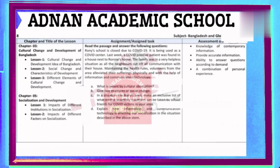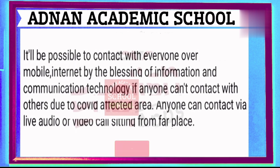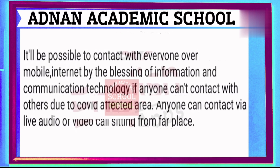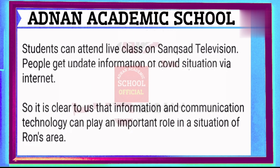Question D: How information and communication technology is affecting socialization in the situation described in the above stem. Information and communication technology can play a vital role in the situation of Ronnie's area. It will be possible to contact everyone over mobile and internet through information and communication technology. If anyone cannot contact others due to COVID in the affected area, they can contact via live audio or video call from a safe place. Students can attend live classes on Sangsad Television. People can get updated information about the COVID situation via internet. So it is clear that information and communication technology can play an important role in a situation like Ronnie's area.